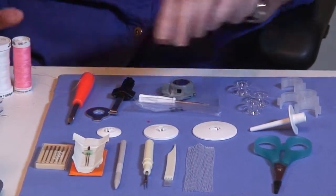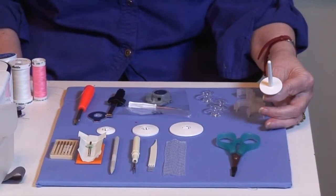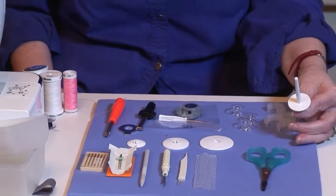We have one other thing here and this is the secondary spool pin and it goes on the bobbin winder. So let me show you where that is.